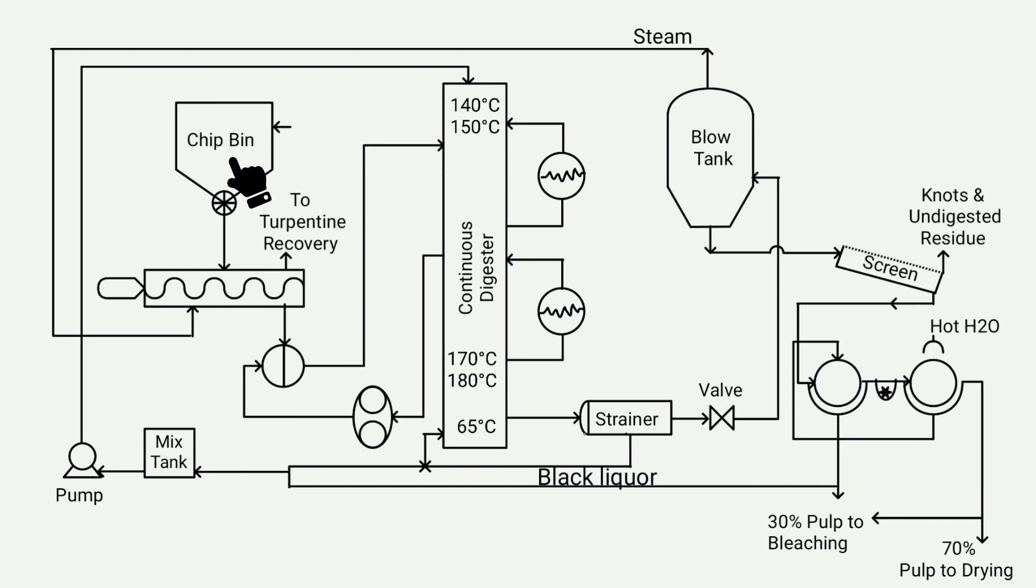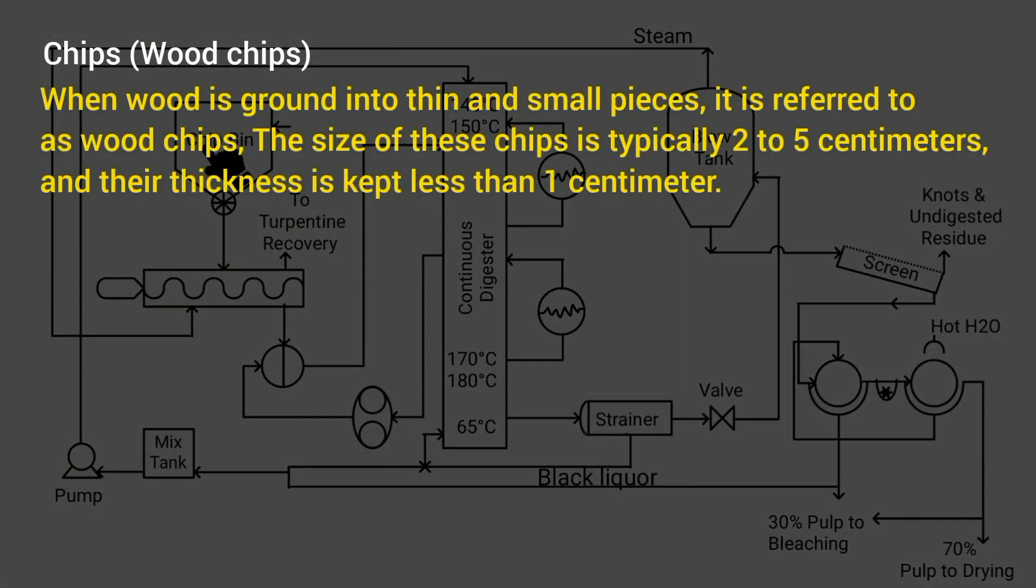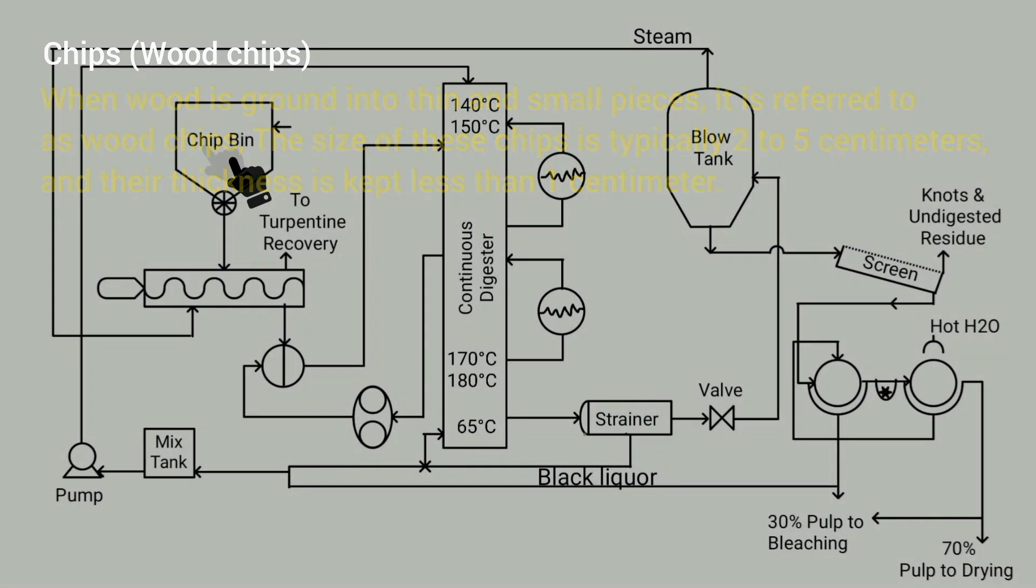Now the question arises, what are these chips? When wood is ground into thin and small pieces, it is referred to as wood chips. The size of these chips is typically 2 to 5 centimeters, and their thickness is kept less than 1 centimeter.